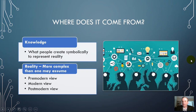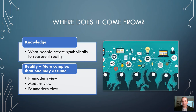What underlies theory is knowledge — the development of knowledge. Why are we so intent on theory in criminology and in all fields? To progress knowledge, to get to the betterment of society and humankind. Knowledge is kind of complex and philosophical — it's what people create to symbolically represent reality. And reality can be more complex than that, as you can really explore if you take courses on philosophy.